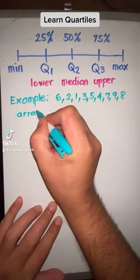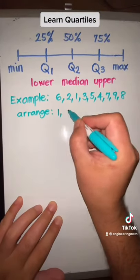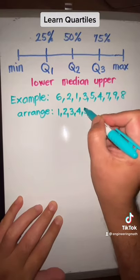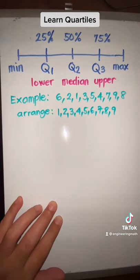Let me show you how you could compute the lower, the median, and the upper quartiles. The first step is to arrange the set of numbers from minimum to maximum, or from the smallest to the largest value.